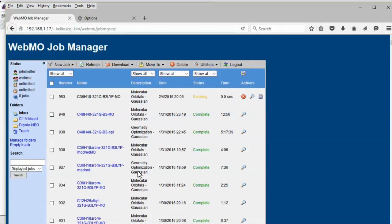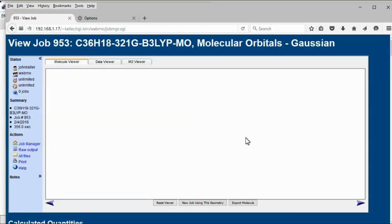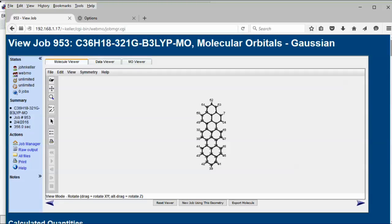When the job is complete, click the job name and choose the MO. The one we are interested in turns out to be number 84.